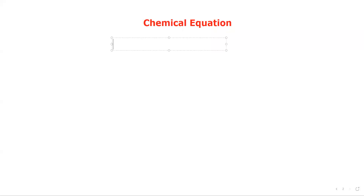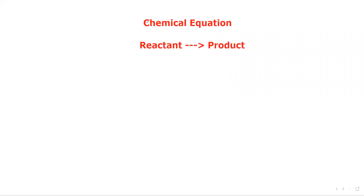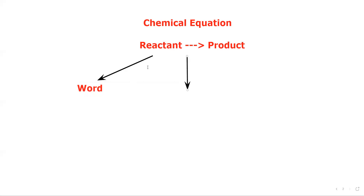A chemical equation shows the relation between reactants and products. Reactants are the substances which combine, and the product is the substance which is formed as a result. A chemical equation can be represented as a word equation, which is the most straightforward, as a symbolic equation, or as an ionic equation.